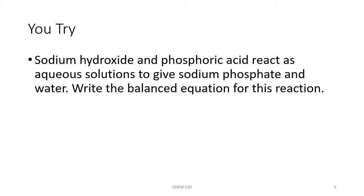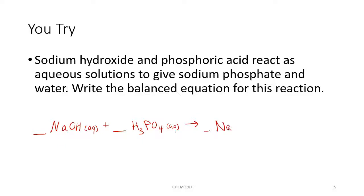Let's try another one. Sodium hydroxide and phosphoric acid react as aqueous solutions to give sodium phosphate and water. Write the balanced equation. The formula for sodium hydroxide is NaOH aqueous, plus phosphoric acid, H3PO4, also aqueous. Our products are sodium phosphate, Na3PO4, which will be aqueous, and water, H2O. Water is a pure liquid, so we'll put a subscript L after it.